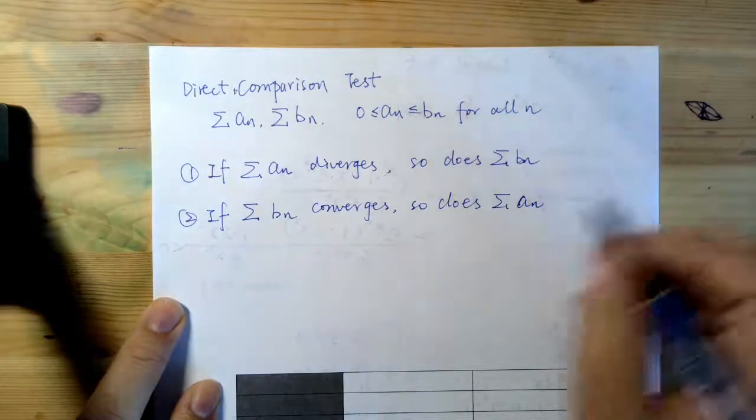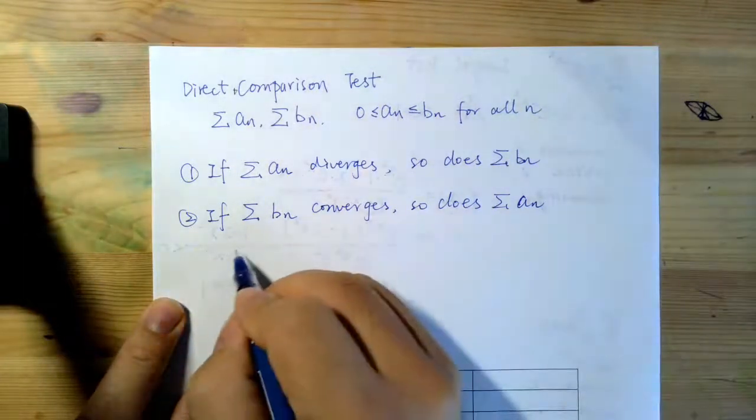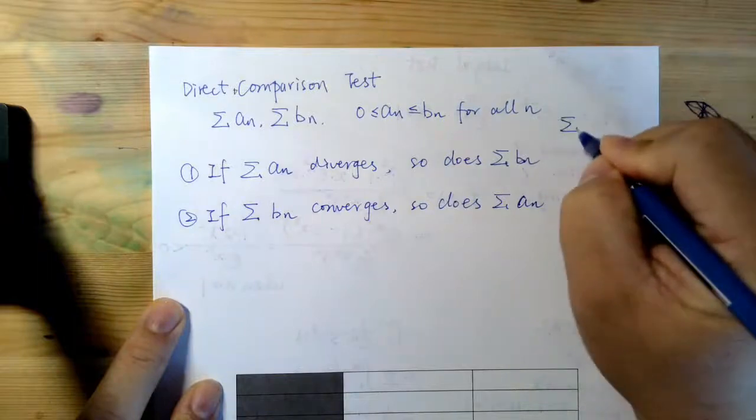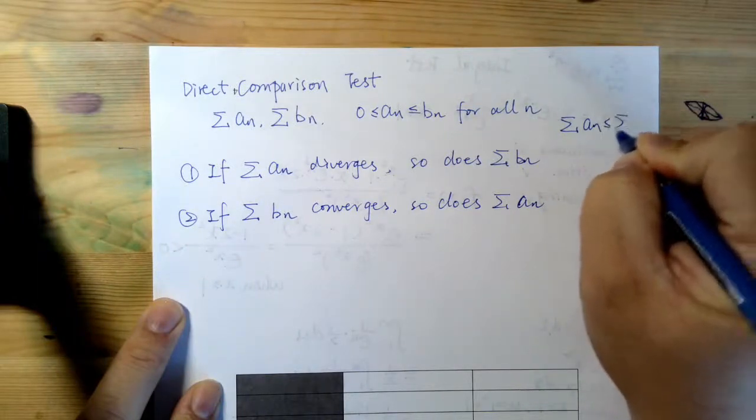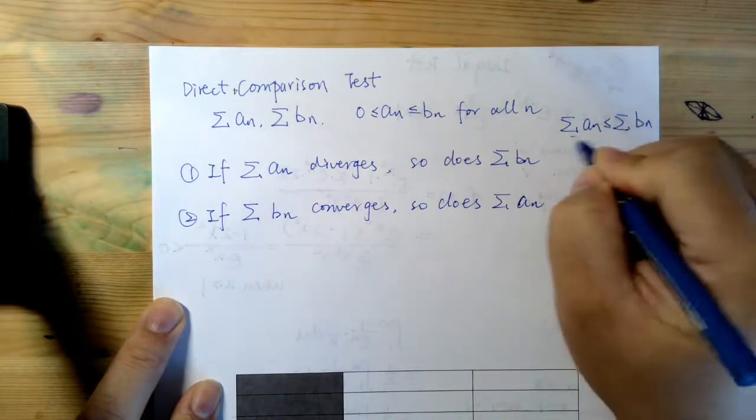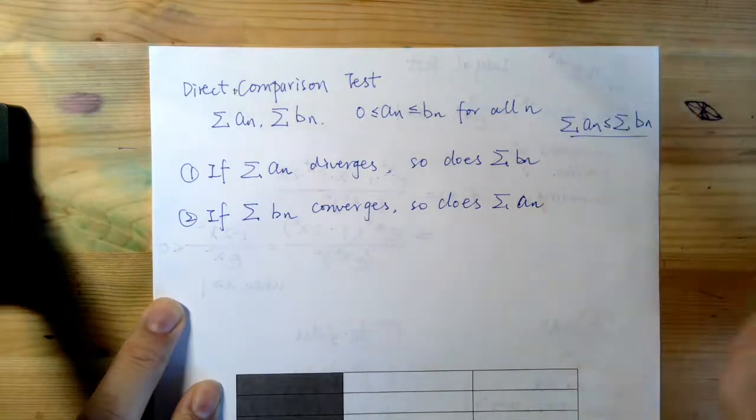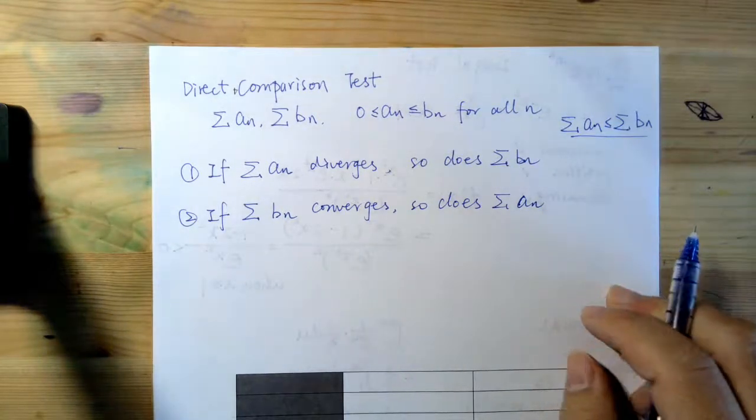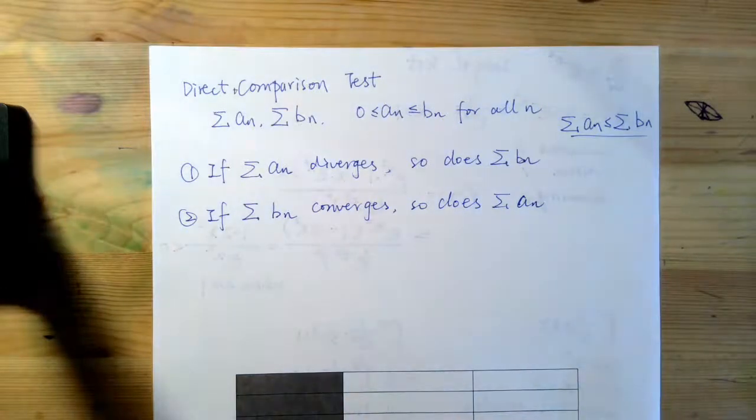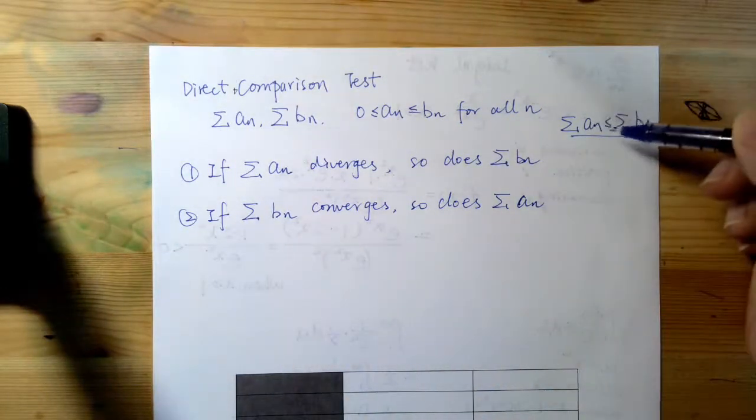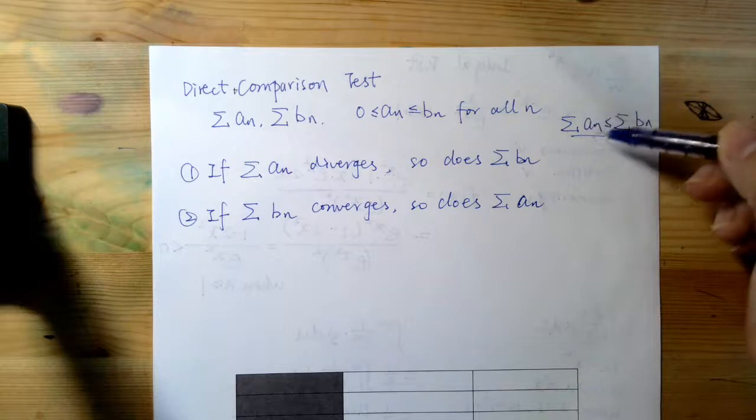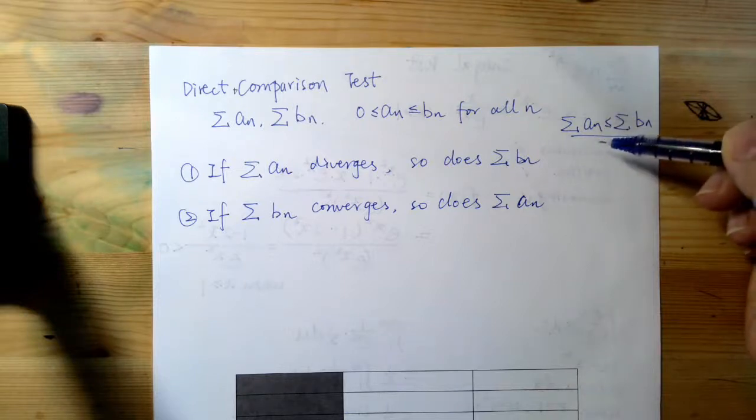You have two series. They have this inequality relationship, and of course they are both positive or at least non-negative. So if the smaller series diverges, the larger series, they must diverge.